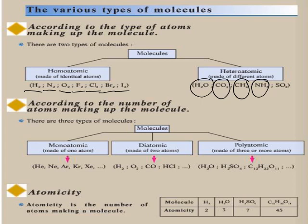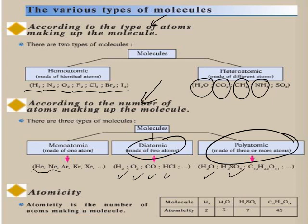According to the number of atoms making up the molecule, there are three types: monoatomic (one atom, e.g. helium, neon, iron), diatomic (two atoms, e.g. H₂, O₂, CO, HCl), and polyatomic (three or more atoms, e.g. H₂O, H₂SO₄). Atomicity is the number of atoms in a molecule: H₂ has atomicity 2, H₂O has atomicity 3 (2+1), and H₂SO₄ has atomicity 7 (2+1+4).